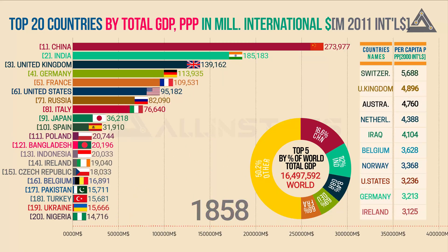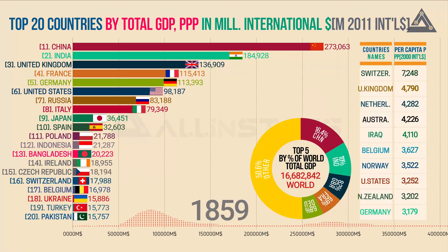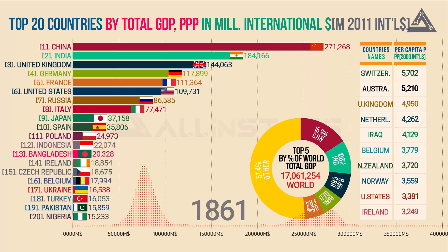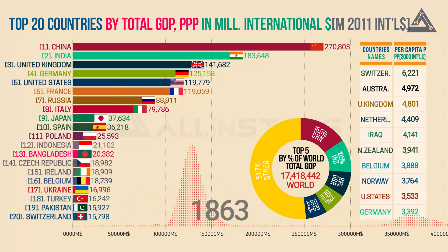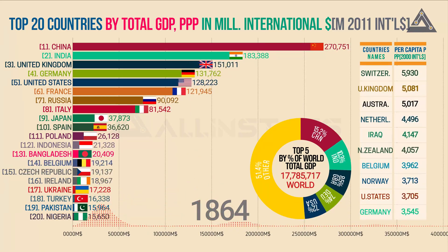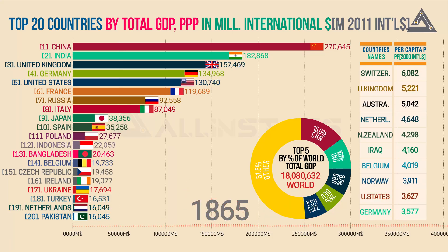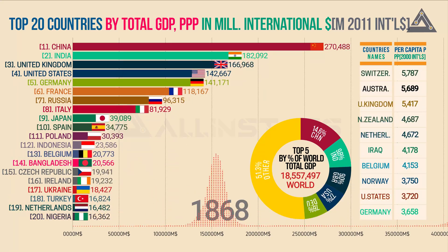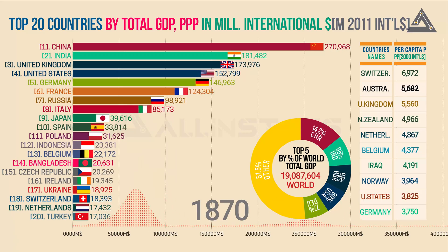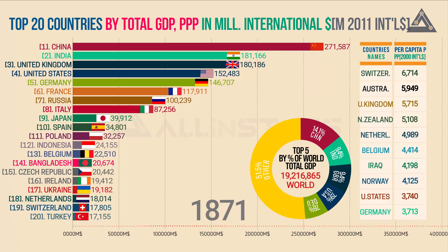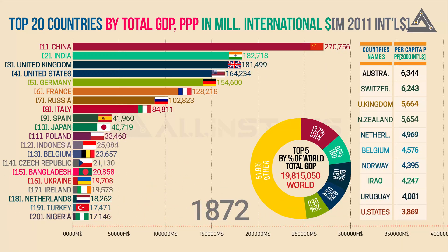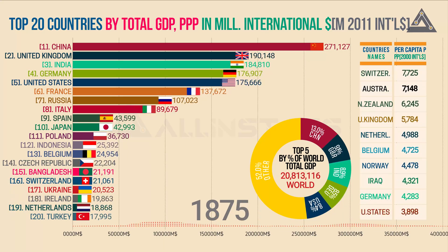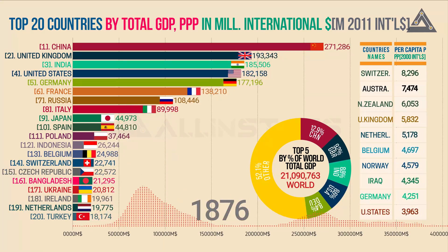Almost all that ordinary people used and consumed in the 17th century would have been very familiar to people living a thousand or even a couple of thousand years earlier. Average incomes in England between the year 1,270 and 1,650 were £1,051 when measured in today's prices.